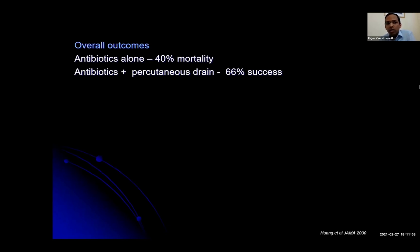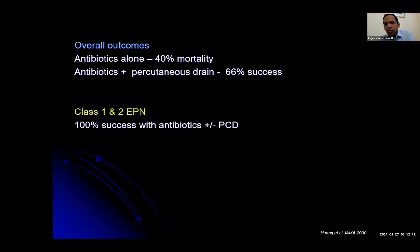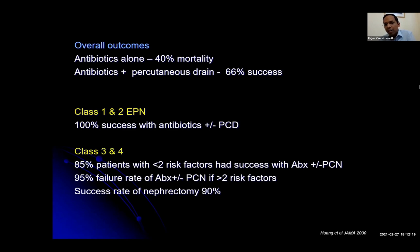In terms of overall outcomes: antibiotics alone carry a high mortality of 40%. A combination of antibiotics and percutaneous drain results in about two-thirds of patients responding. Class 1 and 2 do well with this combination, while the higher classes have a higher risk of treatment failure and progression to nephrectomy.